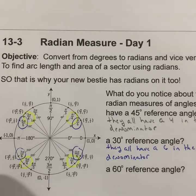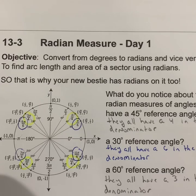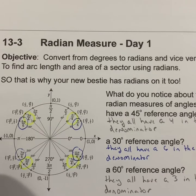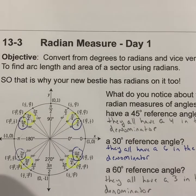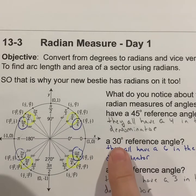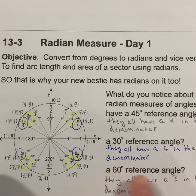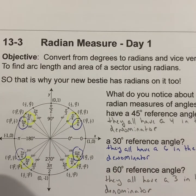For angles with a 60-degree reference angle, if you said they all have a 3 in the denominator, you're absolutely correct. Whenever I see a 3 in the denominator in radian measure, it refers to the 60-degree angle — I just need to know which quadrant it's in to determine the signs of my ordered pairs. One thing that can throw you off: the 30-degree angles have a 6 in the denominator, and the 60-degree angles have a 3. You'd almost think it would be the other way around, but it's not.